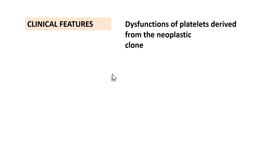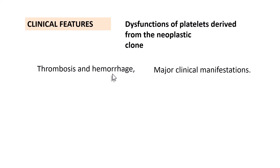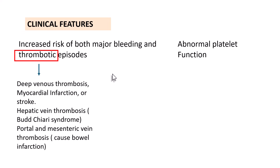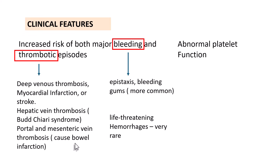Regarding clinical features, the manifestations are all due to dysfunction of platelets derived from the neoplastic clone. Though you have increased platelet numbers, most of these platelets are actually dysfunctional. Thrombosis and hemorrhage are the major clinical manifestations. Thrombotic episodes include deep vein thrombosis, myocardial infarction, stroke, hepatic vein thrombosis presenting as Budd-Chiari syndrome, and portal and mesenteric vein thrombosis which can result in bowel infarction. Bleeding manifestations are subtle — epistaxis or bleeding gums — and life-threatening hemorrhages are extremely rare.